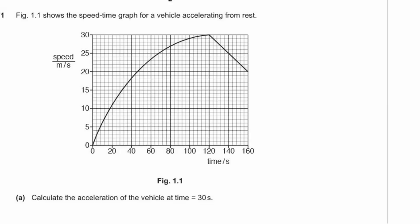Question 1. Figure 1.1 shows the speed-time graph for a vehicle accelerating from rest. Calculate the acceleration of this vehicle at time t equals 30 seconds. Acceleration equals change in velocity over change in time — technically change in velocity over change in time. So we're looking for the gradient of the graph at time t equals 30 seconds. What we need to do is draw a tangent line at t equals 30 seconds.